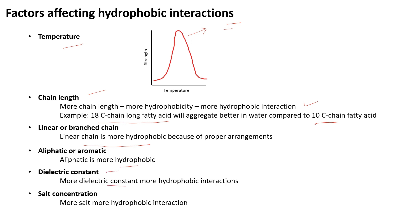Dielectric constant: more the dielectric constant, more the hydrophobic interaction. We already studied that a substance with a high dielectric constant can store more charge, and storage of more charge means there is less ionic interaction. Less ionic interaction means more hydrophobic interaction. Salt concentration also affects this — increasing salt concentration decreases ionic interaction because salt has a shielding effect: the ions shield each other and reduce ionic interaction. Hence, adding salt increases hydrophobic interaction.